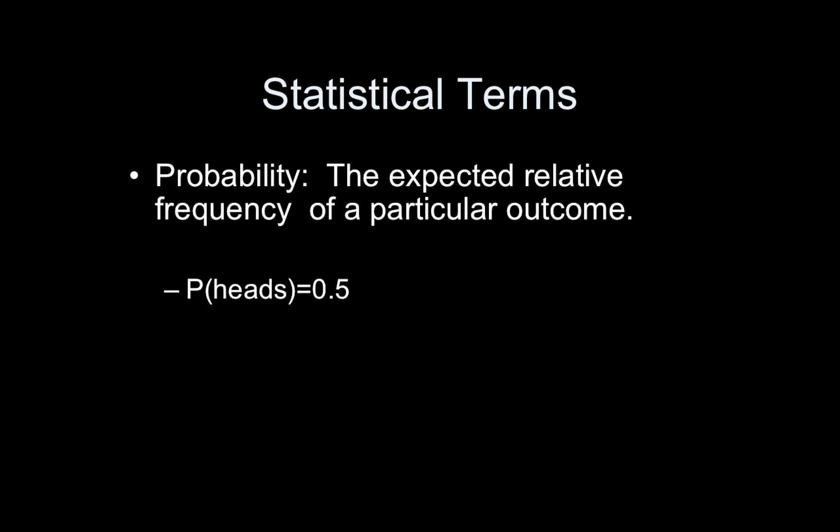So the statistical terms I'll be using, of course, probability. It's just the expected relative frequency of a particular outcome. So, for example, if you have a fair coin, and you flip the coin a ton of times, the probability that you get a heads is 0.5, meaning half of the time you will get a heads.